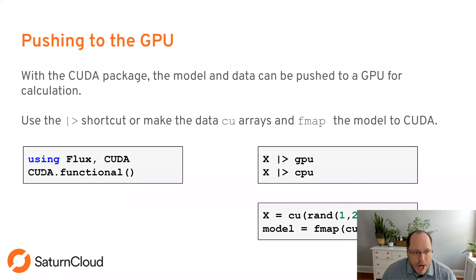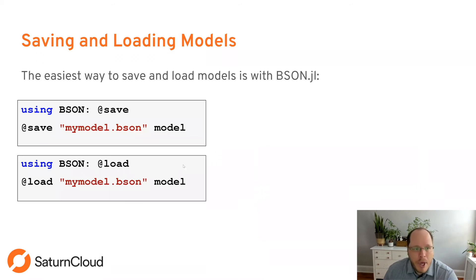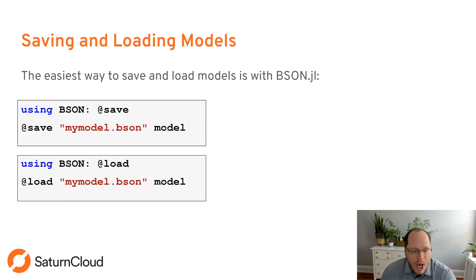When starting with CUDA, I recommend outputting CUDA.functional() — this will tell you if your resource is able to use a GPU or not. To save and load models, the easiest way is with BSON.jl: just call save with the model name and the model object, which saves all the parameters and your training progress. You can load using the same method with the load function.